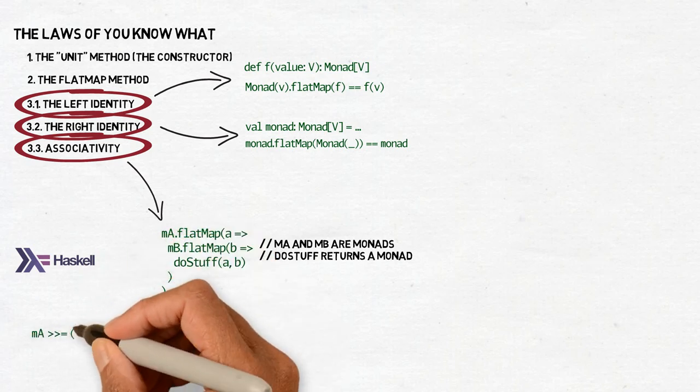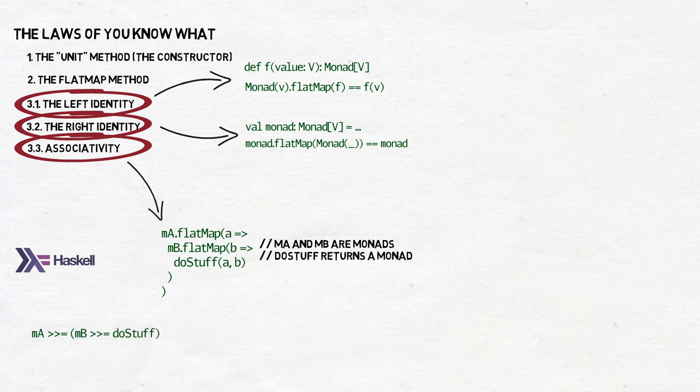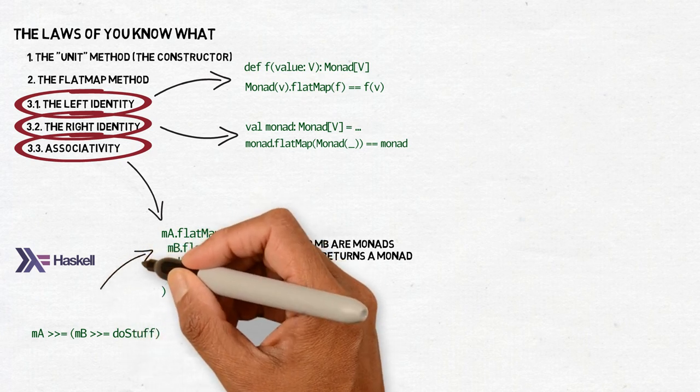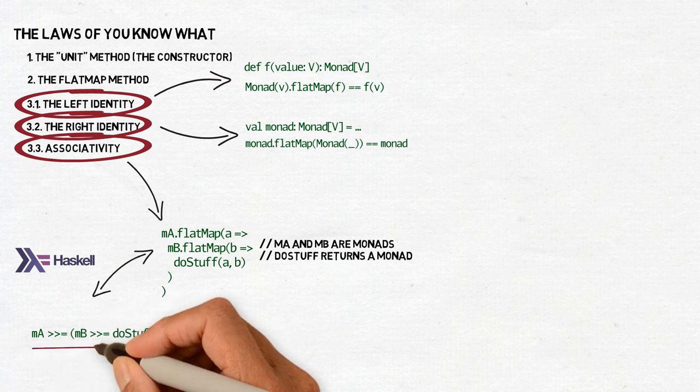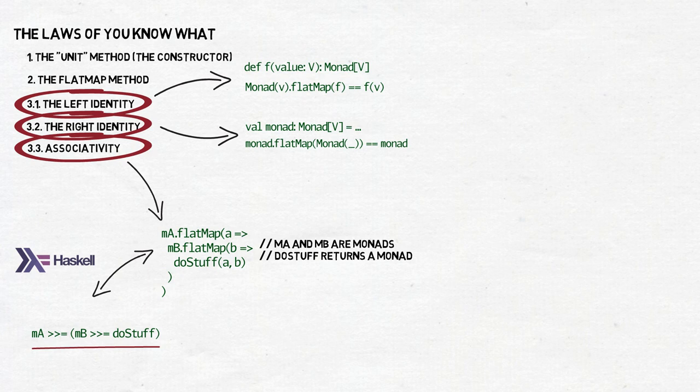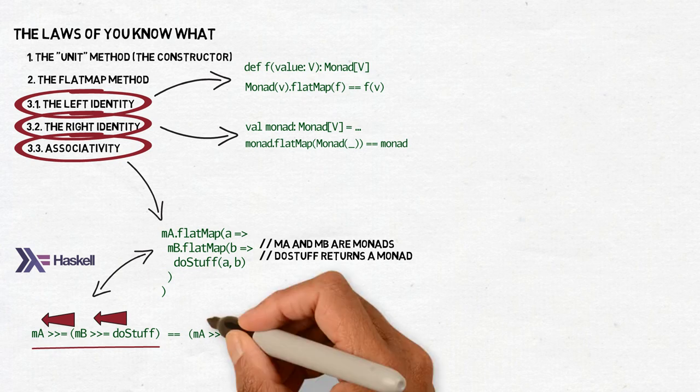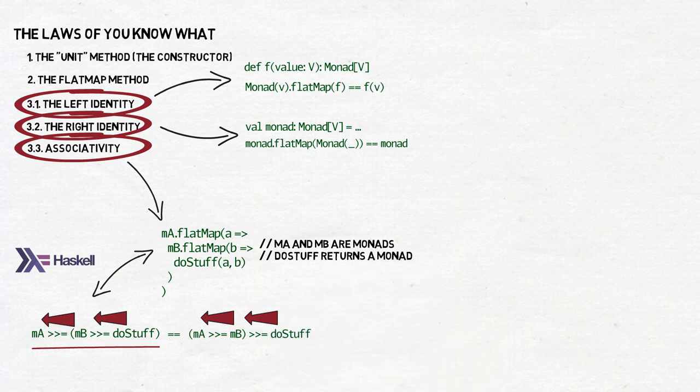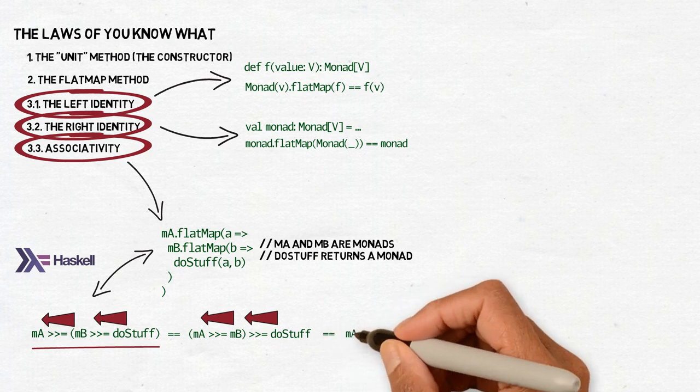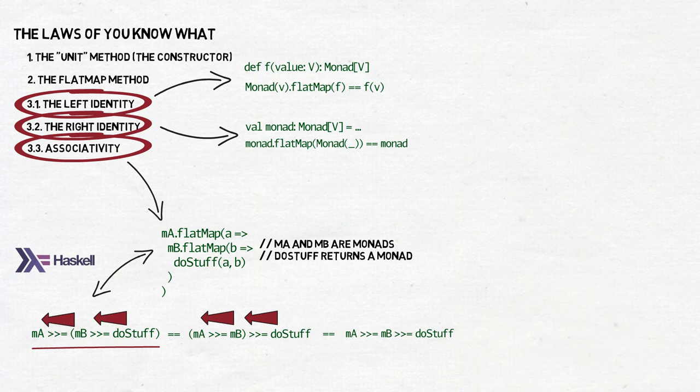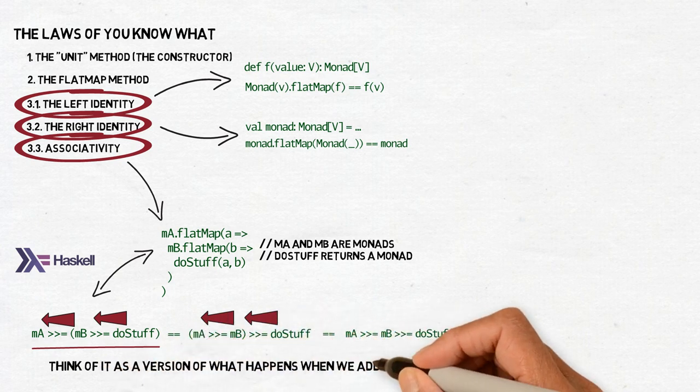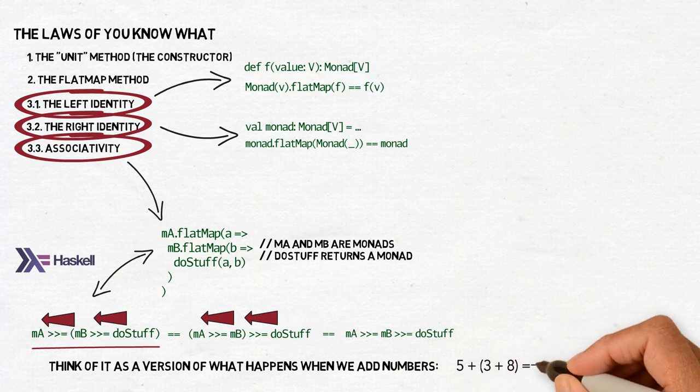As you can see from the parentheses, we will first perform do-stuff on what's inside the b monad, and only afterwards we will pass the result of that to a. We go from the inside out. But here comes the law of associativity, which says that it shouldn't matter which one of the two flatmaps or two operators is used first. ma flatmap of mb flatmap do-stuff should give us the same result as ma flatmap mb and that flatmap do-stuff. And that means that we can also drop the parentheses all together and just do ma flatmap mb flatmap do-stuff. Think of it as a more generic version of what happens when we add numbers. 5 plus 3 plus 8 equals the same no matter which two numbers we will add first. But not every operation obeys this rule. For example, subtraction doesn't. But if we work on monads, their flatmap operations do.